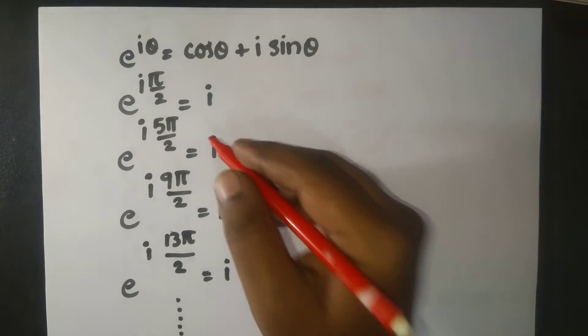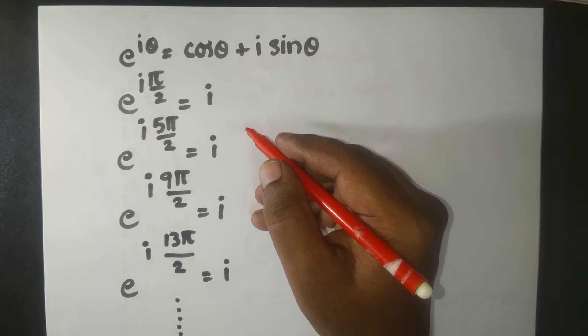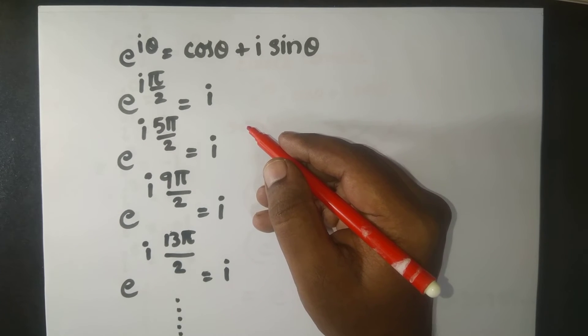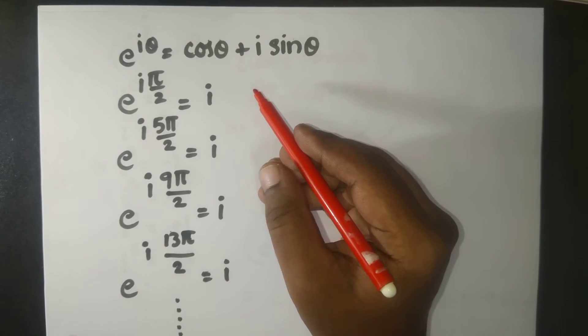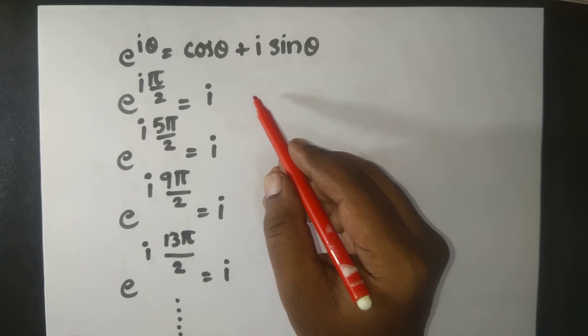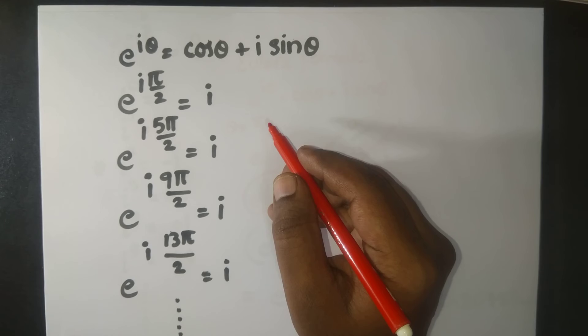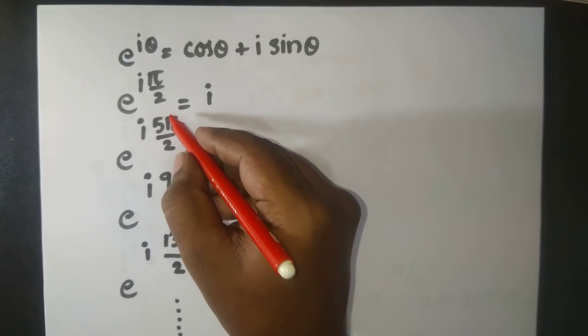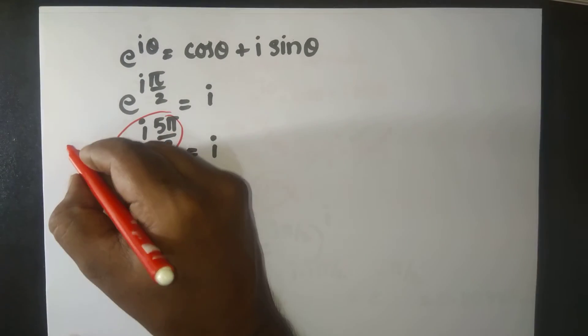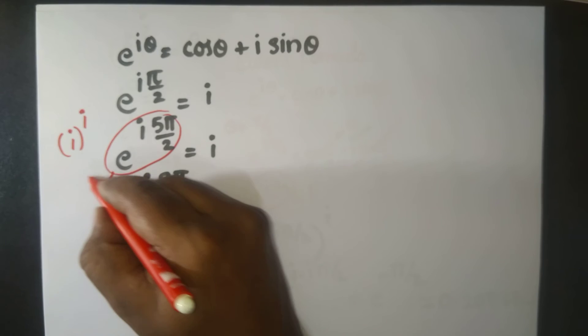So therefore, when we use π/2 in this case, we obtained e^(-π/2) for i^i. So you see in i^i, in place of i, if I use e^(i·π/2), we get e^(-π/2), and that is 0.2078795 and so on. Now when we plug in i equal to e^(i·5π/2), so now you plug in this.